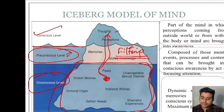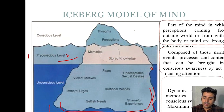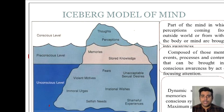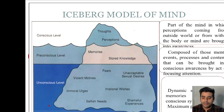This is called the Iceberg Phenomenon. If you look at this picture, you can see the level of the Conscious Mind. The level of the Conscious Mind includes thought and perception and everything, but it is very small.